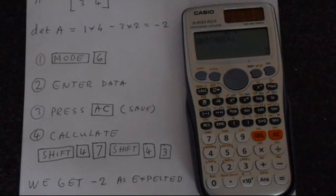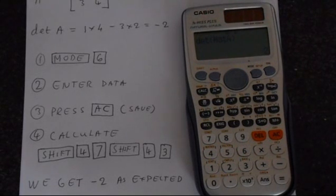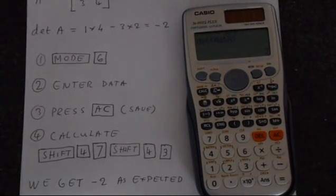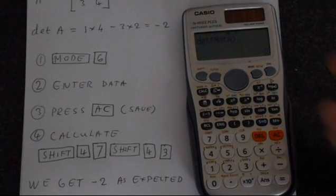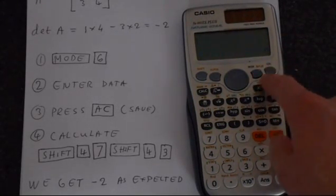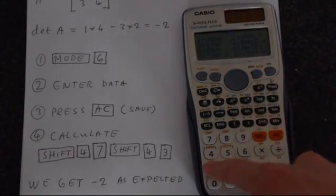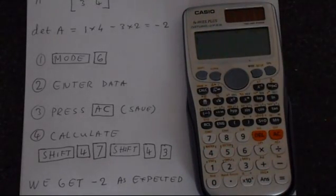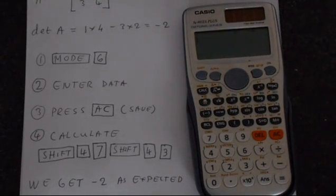If you put in a matrix that doesn't have a determinant, you'll obviously get an error. Square simply means the same number of rows as columns. And if you want to get your calculator back to normal, just press mode and then 1, and your calculator is exactly as you found it. So that's how you find a determinant using your Casio calculator. Thank you for watching.